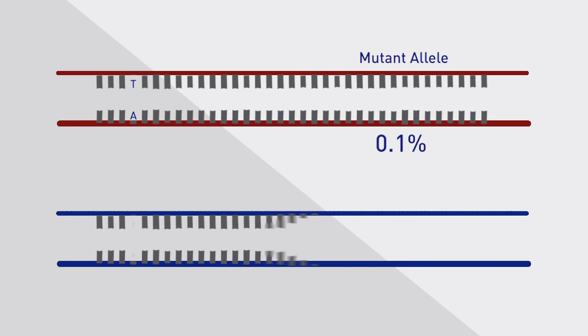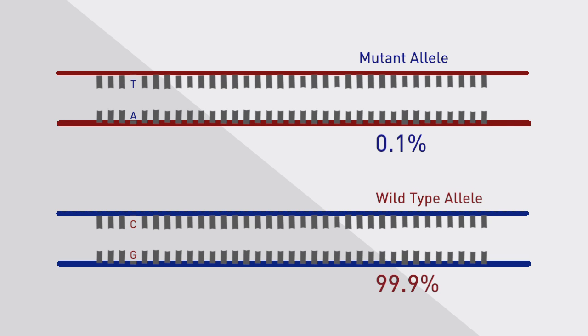Let's take an example of a tumor sample in which only 0.1% of the DNA contains a somatic mutation and the other 99.9% is normal wild-type DNA.